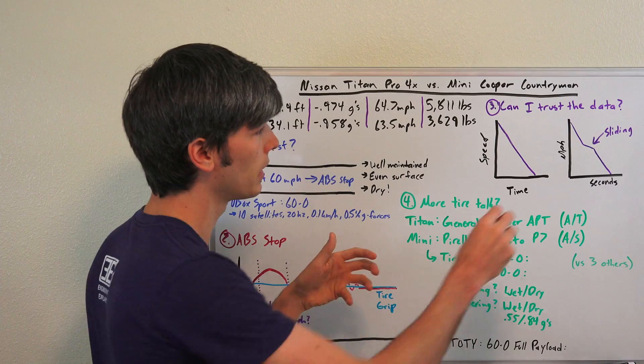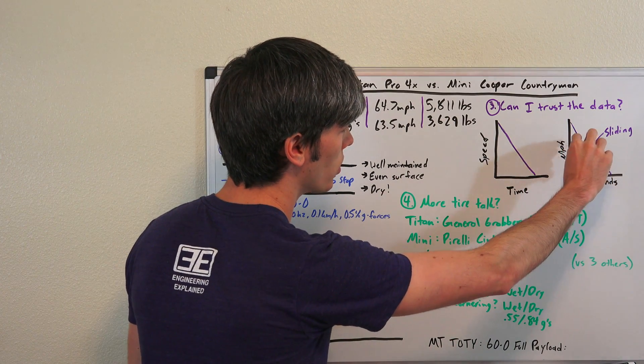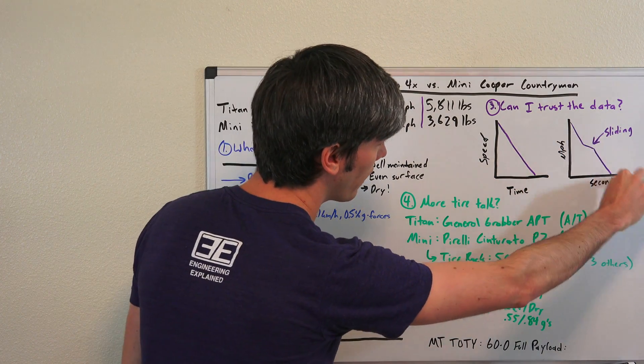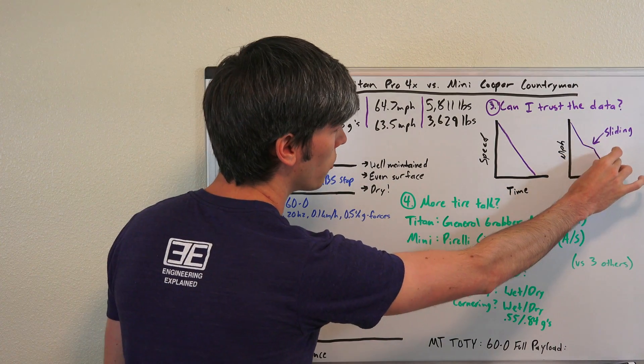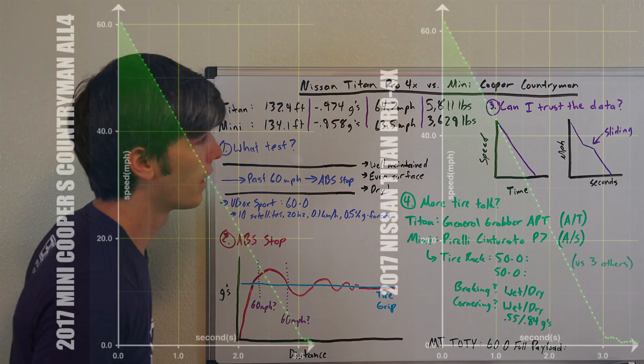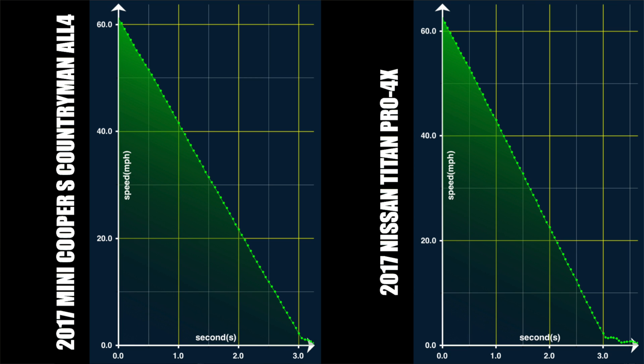If you did have a little kink in that line, that would be indicative of the fact that you probably hit a little patch there or locked up completely. You can look at both graphs for both vehicles and both of them have a nice linear curve, so that tells us we can really trust that data because there was no sliding in either case.